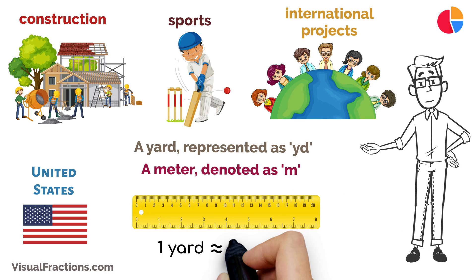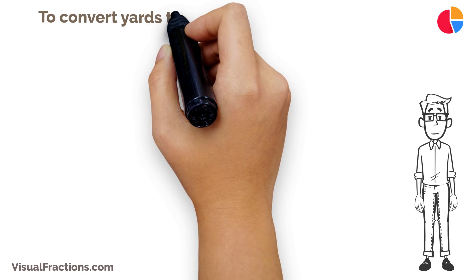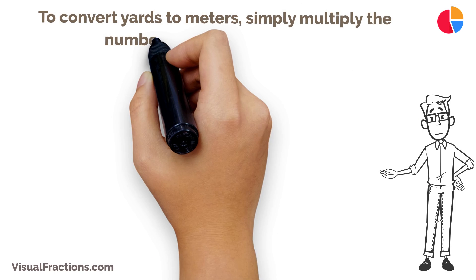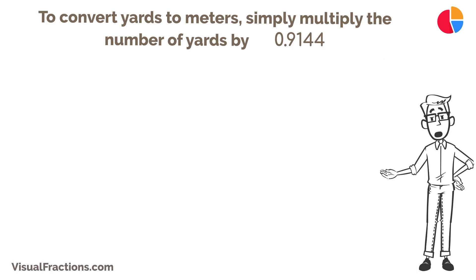Here's the crucial conversion factor: One yard equals approximately 0.9144 meters. To convert yards to meters, simply multiply the number of yards by 0.9144.